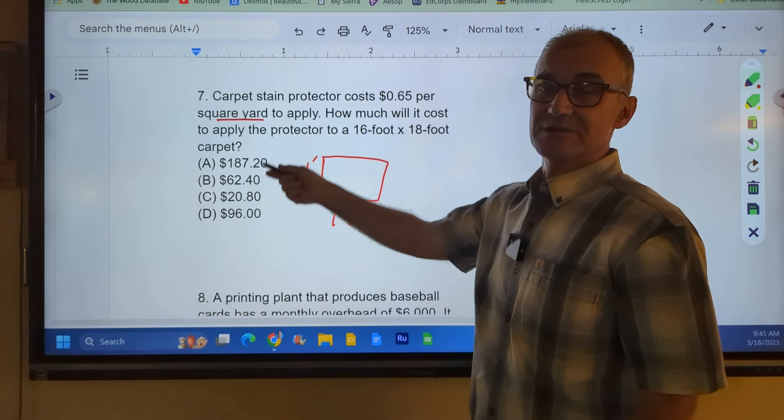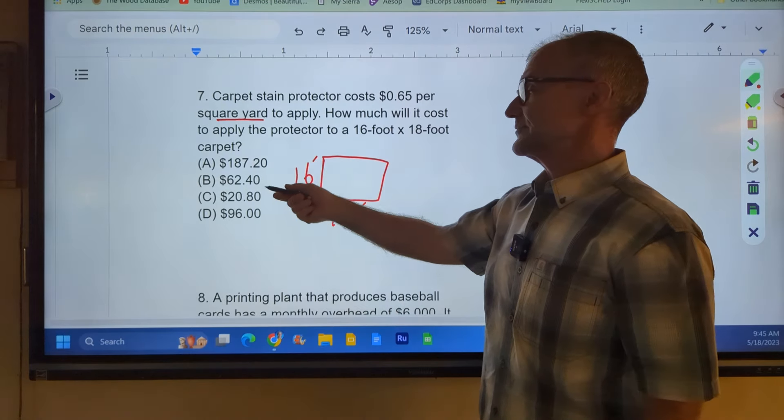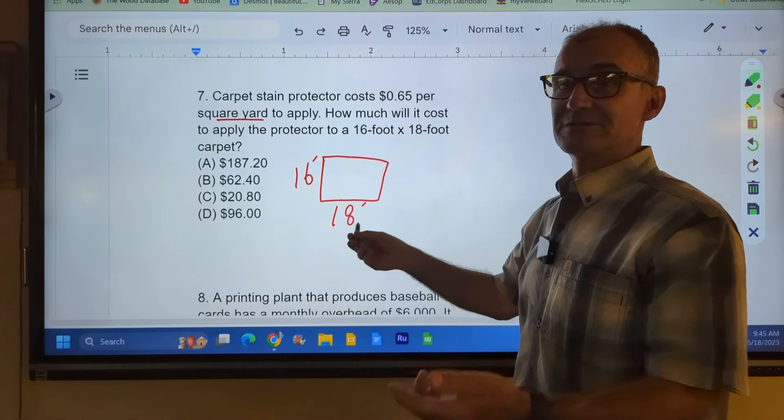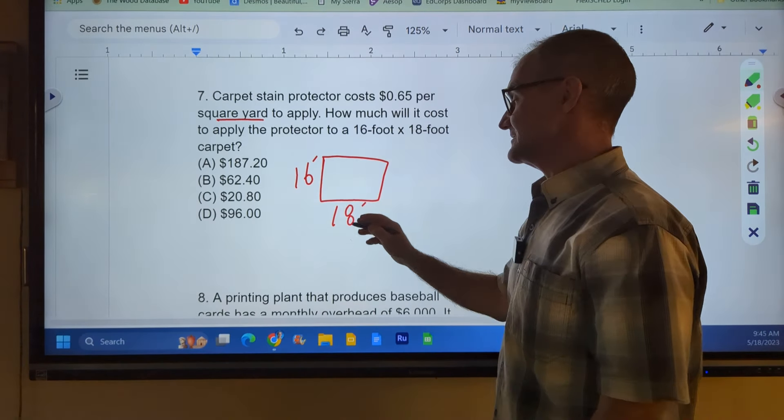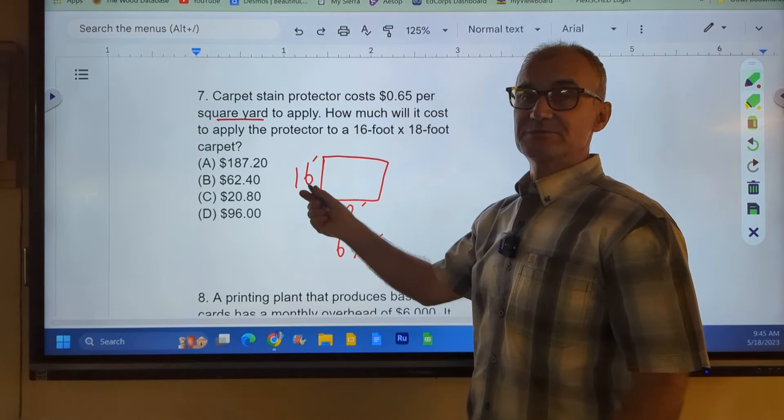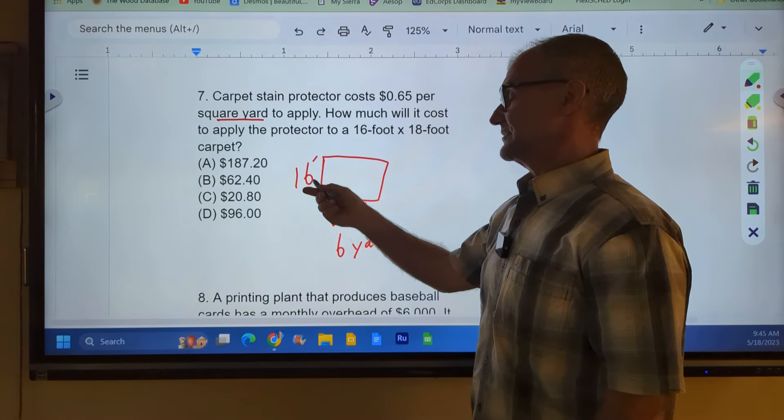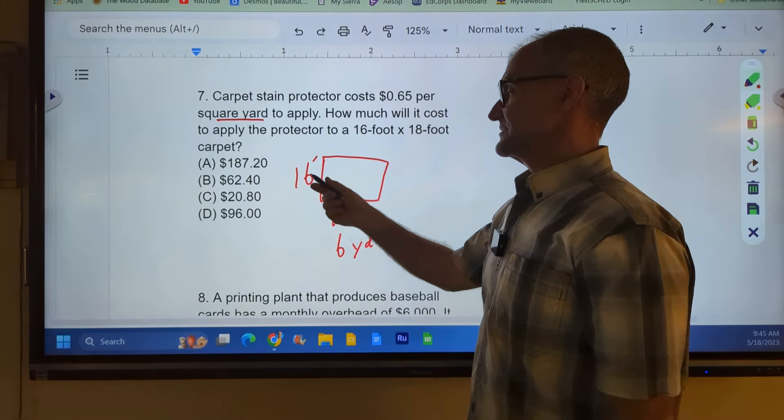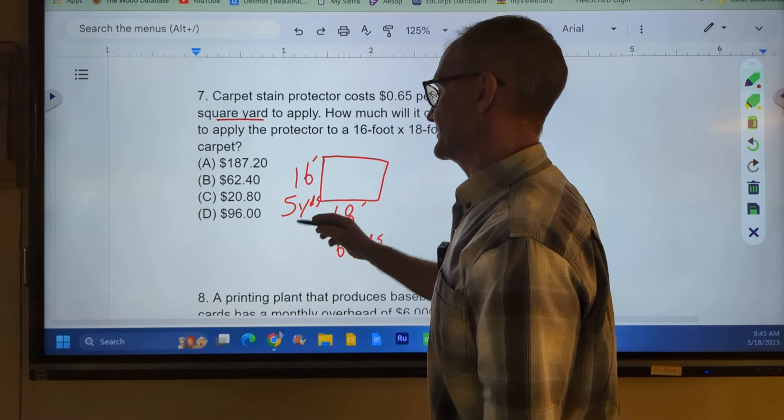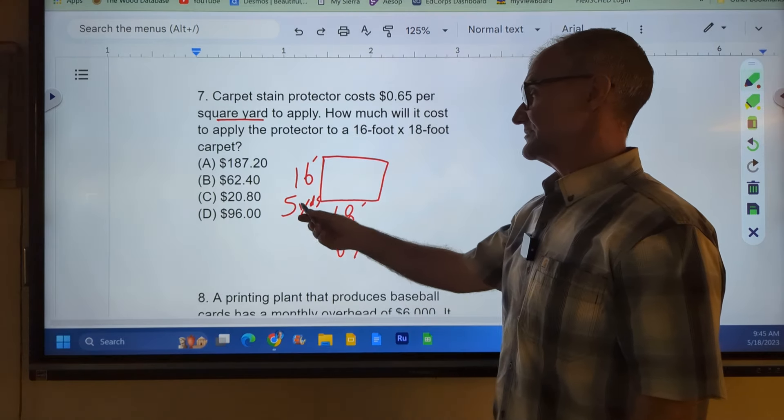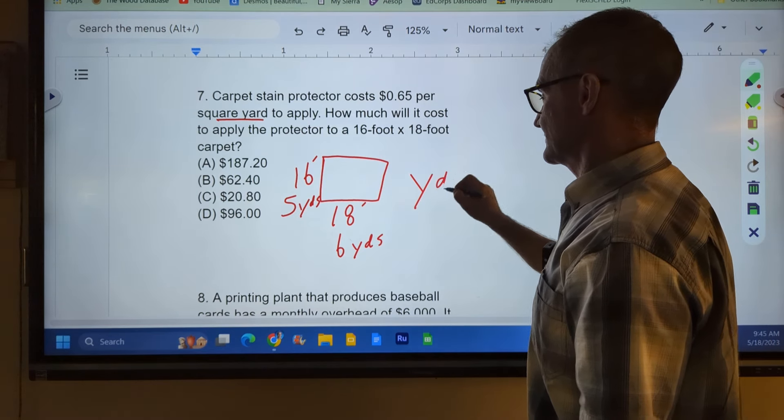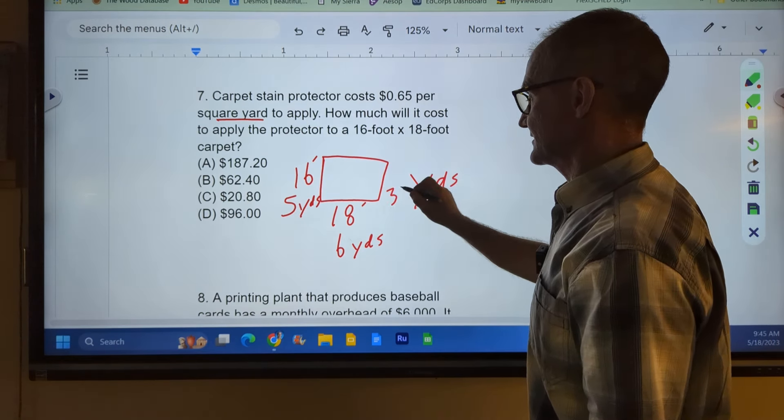So I'm going to do 18 divided by 3, three feet per yard. 18 divided by 3 is 6 yards. 16 divided by 3 is 15 and a little bit. So, or 5 and a little bit, right? So 16 divided by 3, it's going to be 5 and a little bit. So this is about 5 yards, a little bit more than 5 yards, but if I do 5 times 6, I get approximately 30 yards, right? So this is going to be approximately 30 yards. It's going to be a little bit more, but we're going to stick with that.